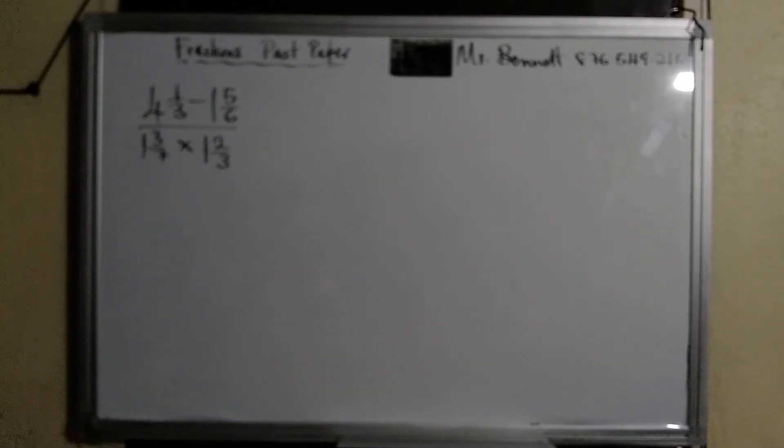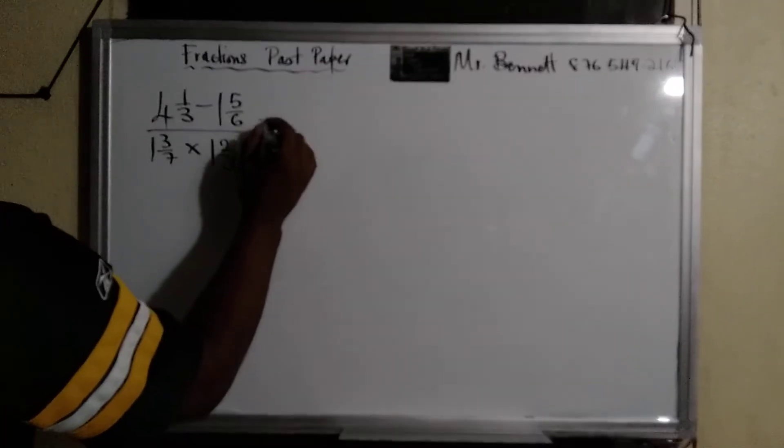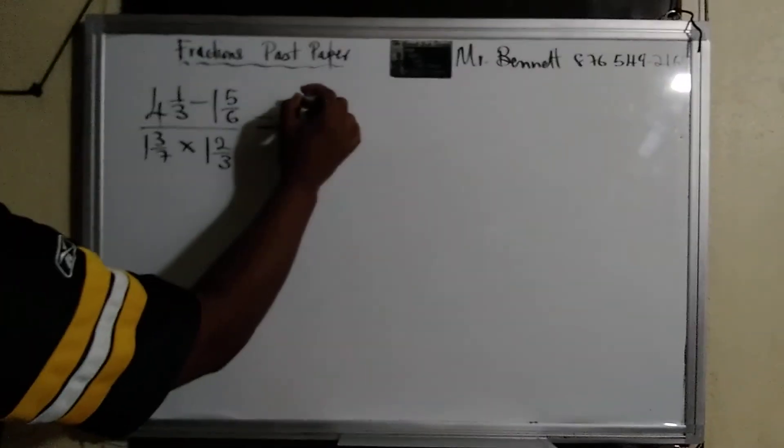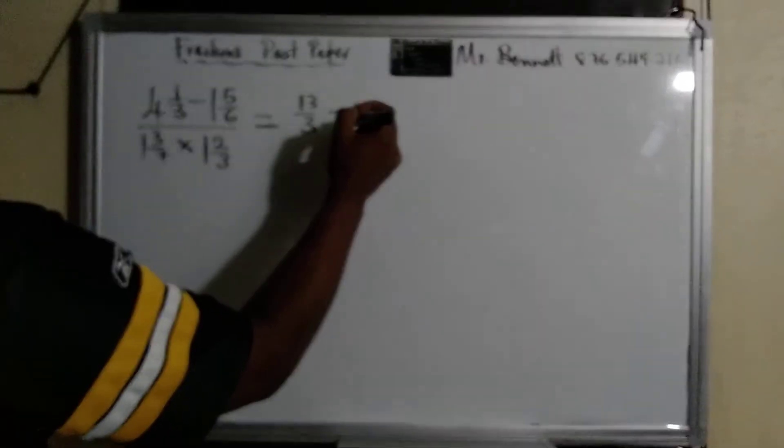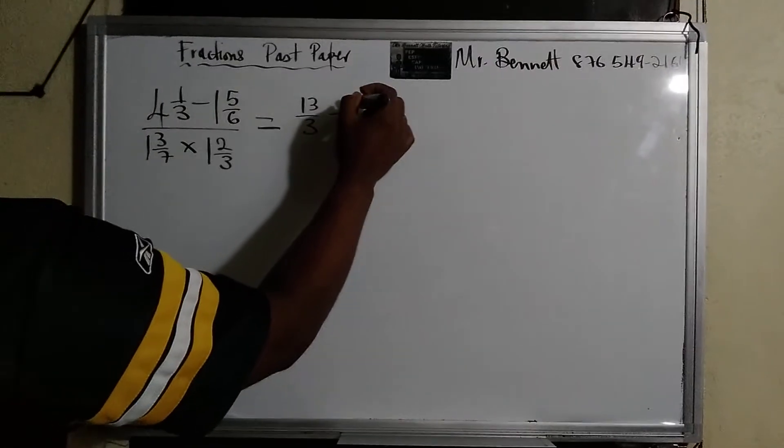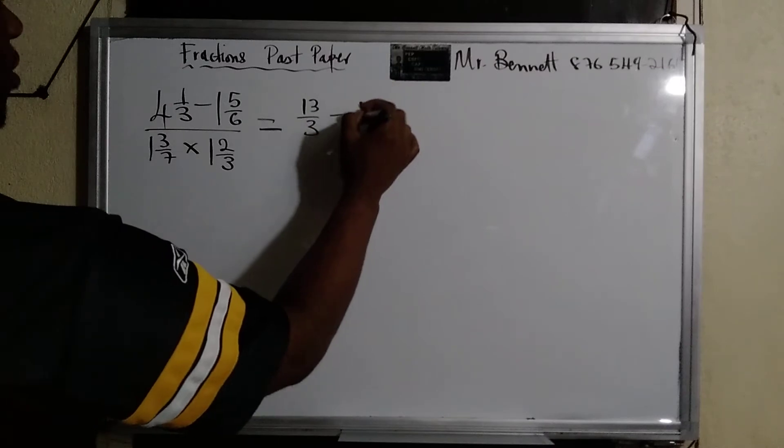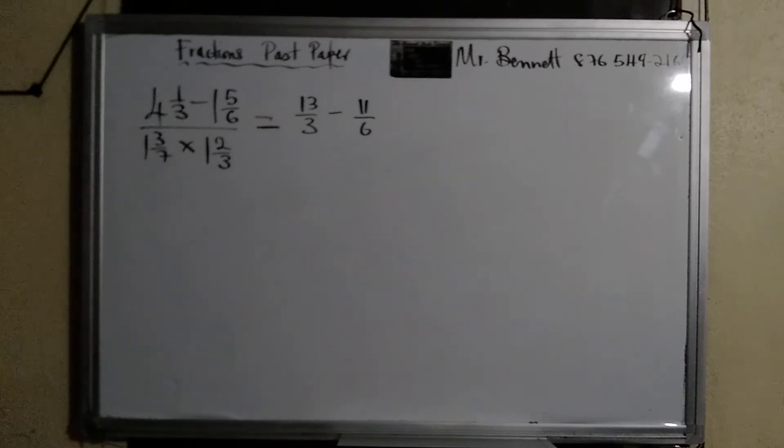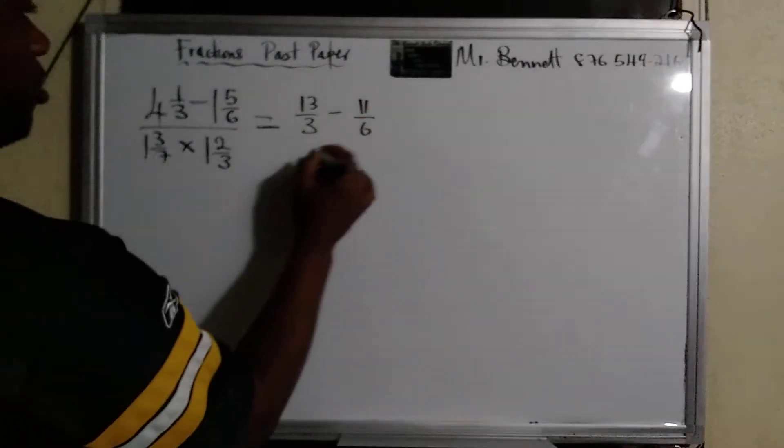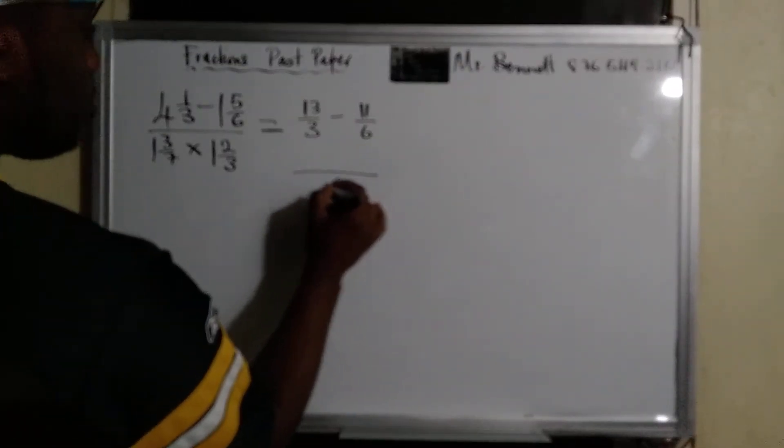Take away, take away, multiplication, and division. So let's write the top again. So four times three is twelve and one, thirteen over three, minus one, five. One times six is six, plus five, that's eleven over six.